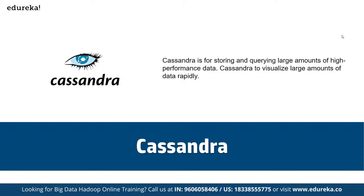To understand how big data analytics works, there are four steps involved in the entire process: first, collect the data; second, process that data; third, clean the data; and fourth, analyze the data. Collection, processing, cleaning, and analyzing are the four main parts of big data components.